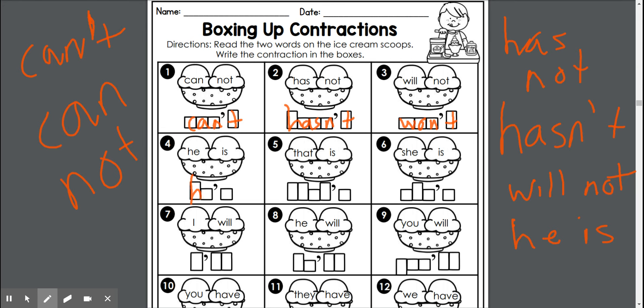So we're going to go ahead and shorten that word, and it's going to be H-E apostrophe S for he's. He's stands for he is.